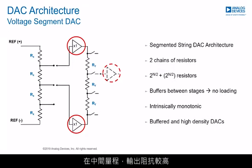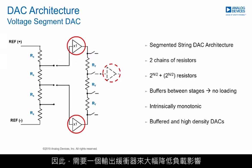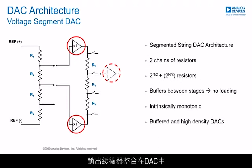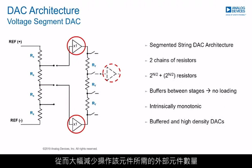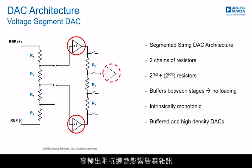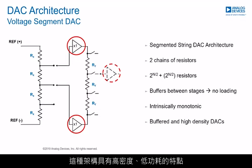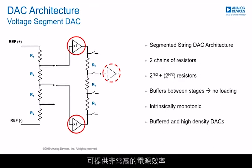The output impedance is relatively high across codes. Consequently, an output buffer is required to minimize load effects. The output buffer is integrated within the DAC, minimizing the number of external components required. The high output impedance also affects Johnson noise, which is higher compared with other architectures. This architecture offers high levels of density, which combined with low power consumption and integrated features like buffers and voltage reference, offers a real high level of power efficiency.